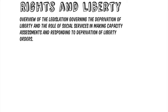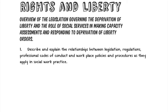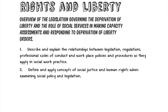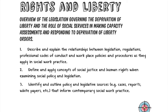This is about rights and liberty. It provides an overview of the legislation governing the deprivation of liberty and the role of social services in making capacity assessments. The outcomes here are about describing and explaining relationships between legislation, regulation and codes of conduct, concepts of social justice, human rights, and the sources or origins of British law on these topics.